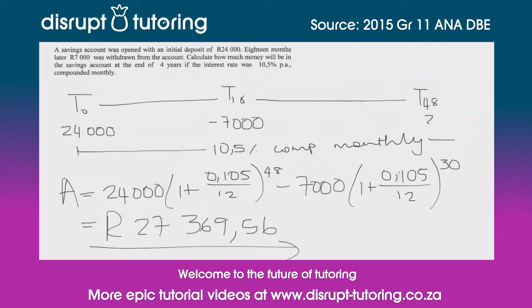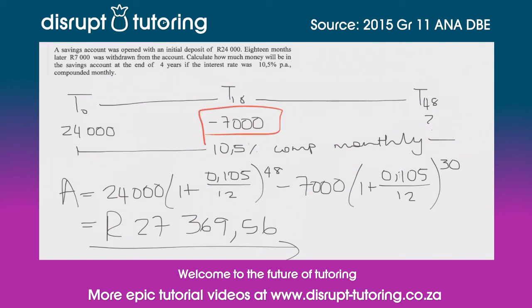What's very important here is building the timeline so everything is clear and easy to work with — thinking through how the R24,000 grows if it stays in until 48 months, but also recognising that we haven't only pulled out R7,000; we've also lost any interest that R7,000 would have earned if left in until the 48th month. That gives you the full answer to this question, worth five marks.